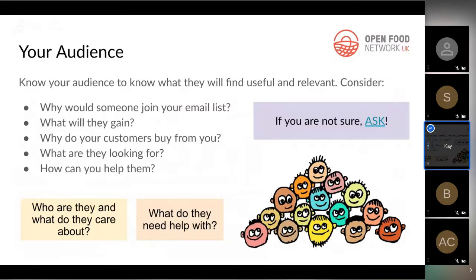Think about what value you can offer customers for joining your email list. For example, using emails to remind customers of your order cycles is actually really useful for them — your customer probably doesn't want to forget or miss an order cycle. Even if they're not ordering that week, a reminder won't be a nuisance because they'll think it's nice to be reminded. Email marketing has a bit of bad press, but believe that your customers want to hear from you and that what you offer is of value.